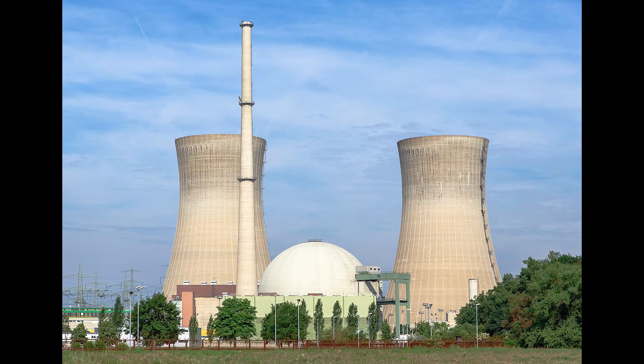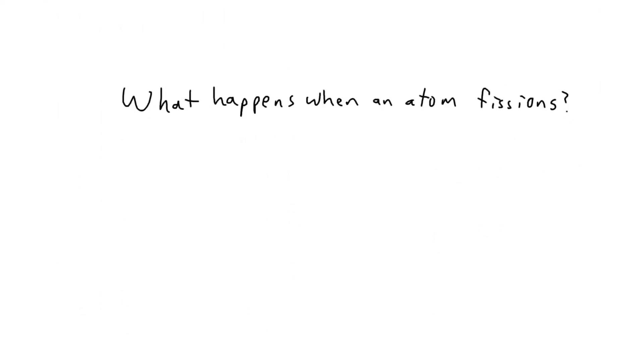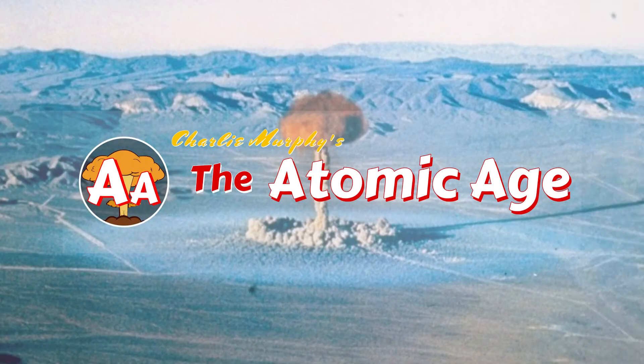Nuclear fission. Without it, there would be no nuclear reactors and no atomic bombs. But what happens when an atom fissions? Also, fissions can lead to a chain reaction. What is a chain reaction, and can a chain reaction be controlled? That's what we're exploring today on The Atomic Age.